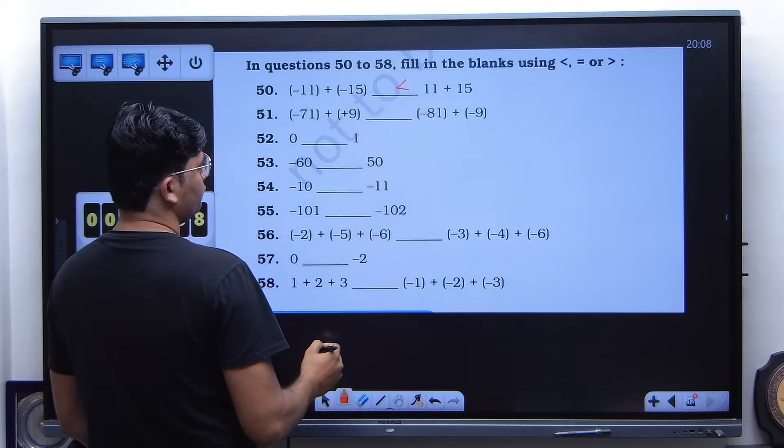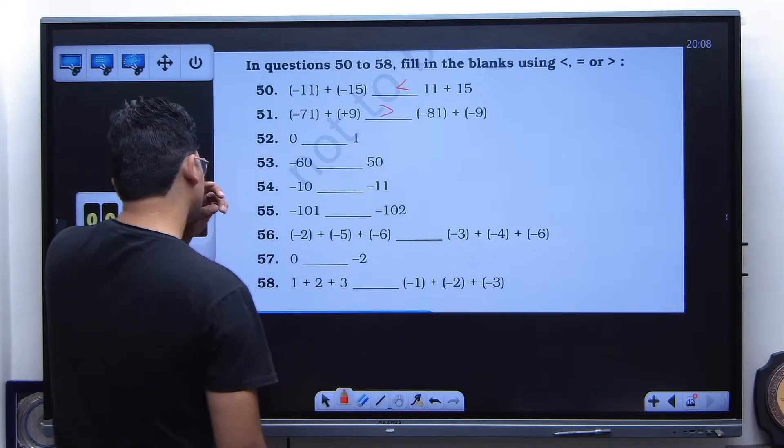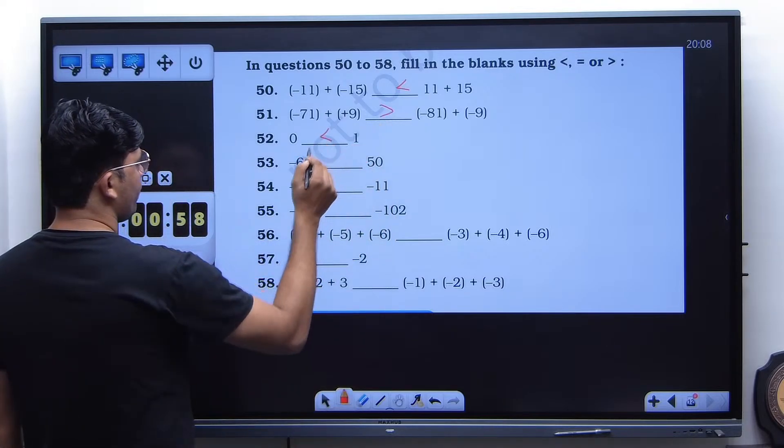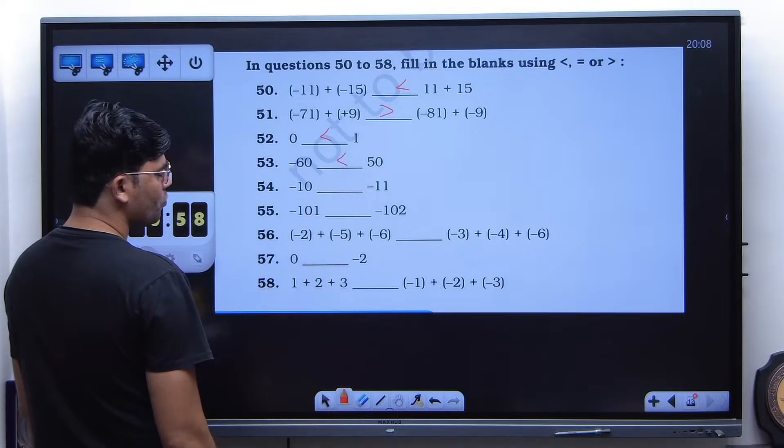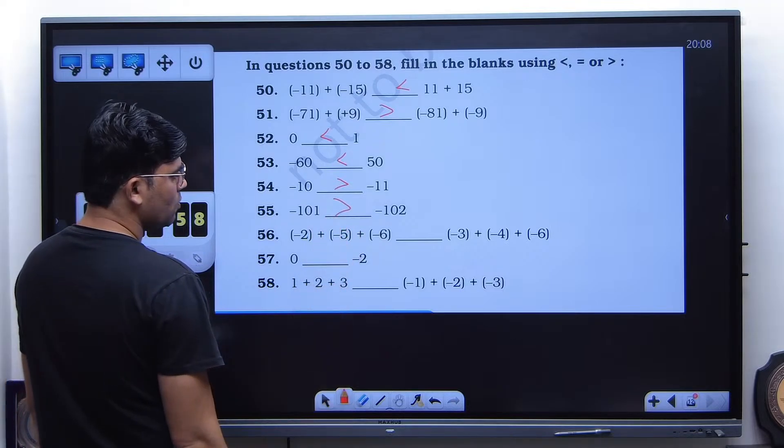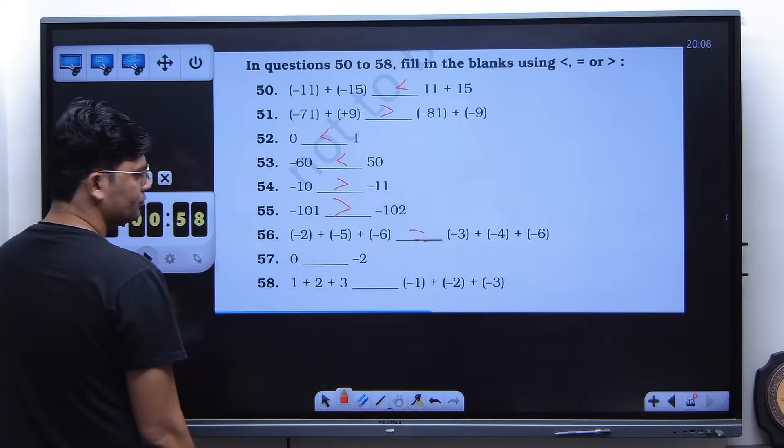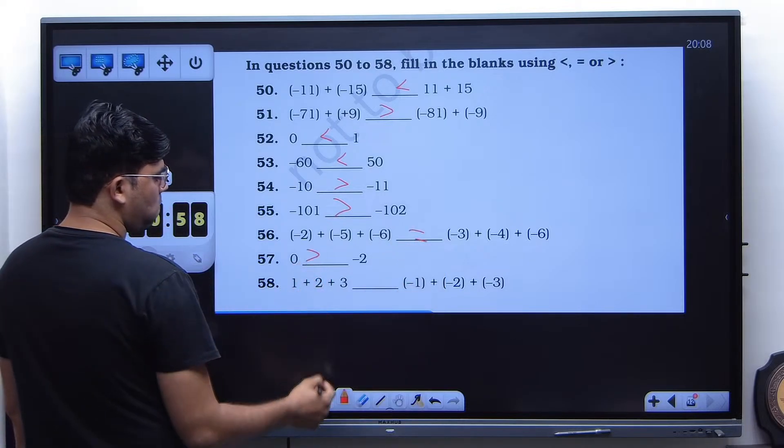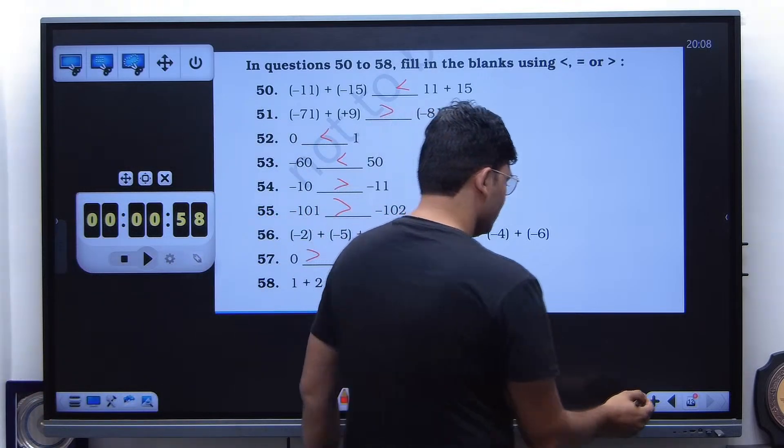And then left side is greater. Right side is greater. Right side is greater. Left side is greater. Left side is greater. Equal to. Left side is greater. And left side is greater. Well done.